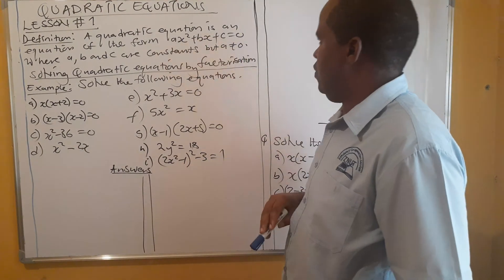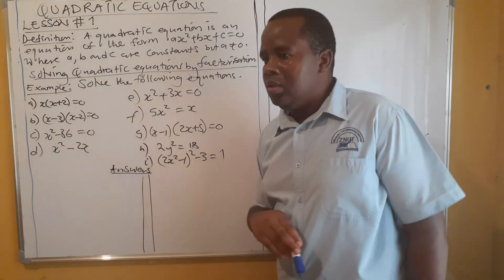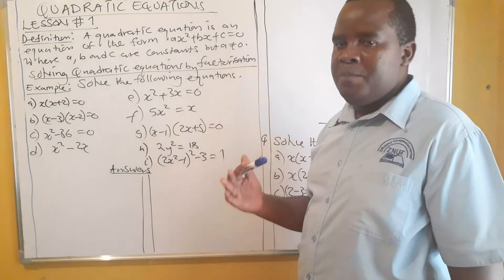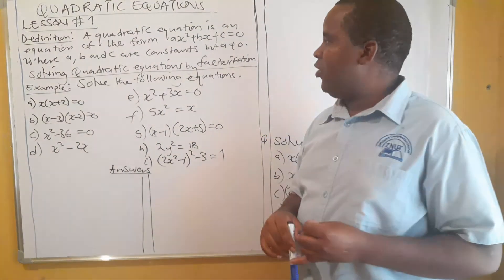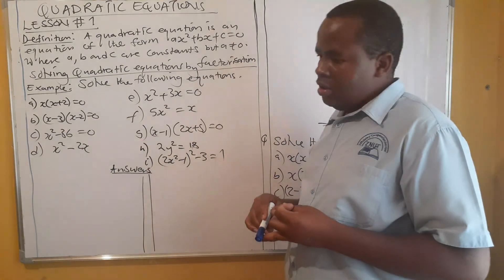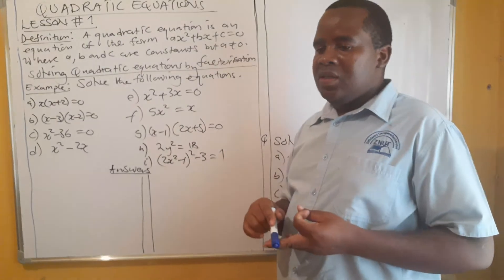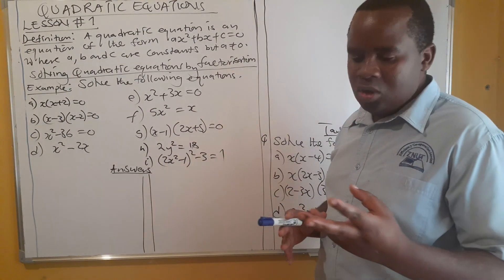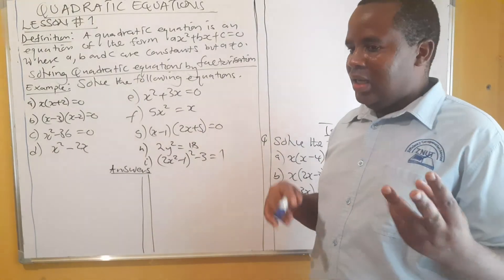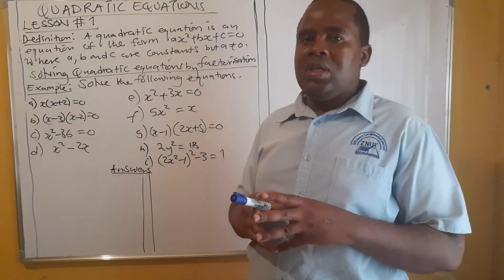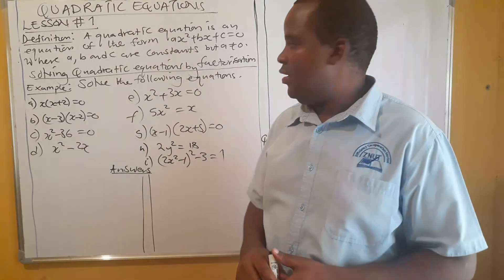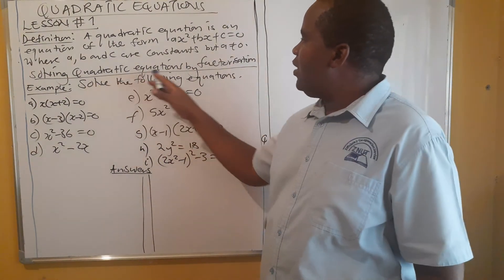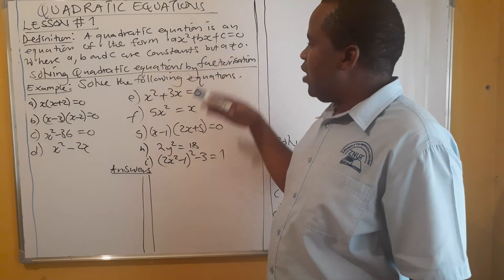When you substitute, the result should be zero. To do that, we have about four methods: the graphical method, factorization method, quadratic formula method, and completing the square. In these presentations, we deal with only three. The graphical method will be covered when we deal with cubic functions. For this presentation, I will look at how we can solve quadratic equations using the factorization method.